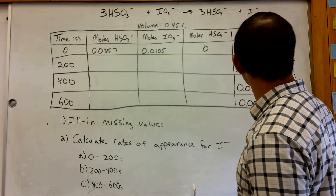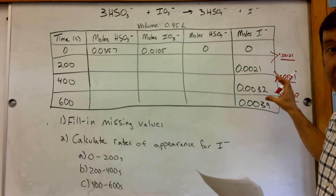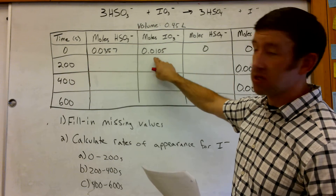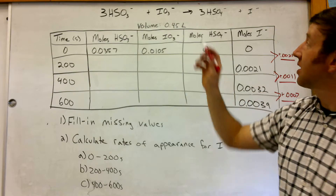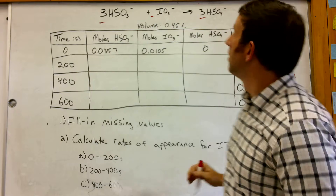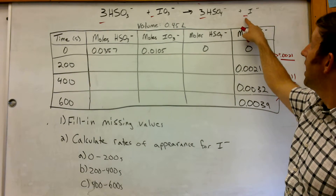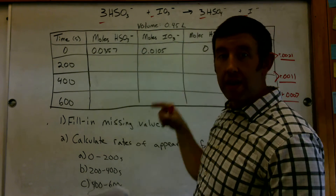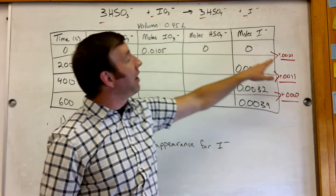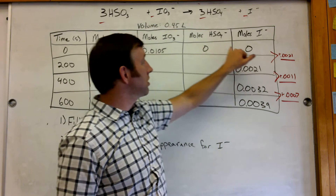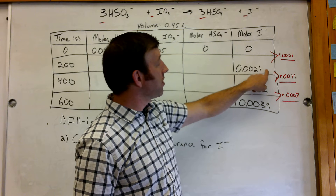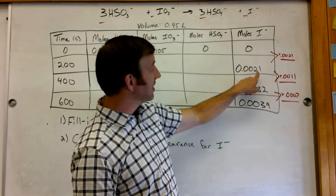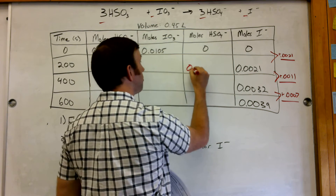Now I know how much iodine is appearing during those time periods, and from that I can figure out how much hydrogen sulfate I'm producing. My coefficients in this reaction — notice here I have no coefficients, that just indicates 1. That means that this hydrogen sulfate ion with a negative 1 charge is going to form at a rate that is triple the rate of my iodine formation. So since I'm starting with 0, if iodine forms at 0.0021 moles during that time, I'm going to triple that for this ion because it forms 3 times as fast. So 0.0021 times 3 gives me 0.0063.